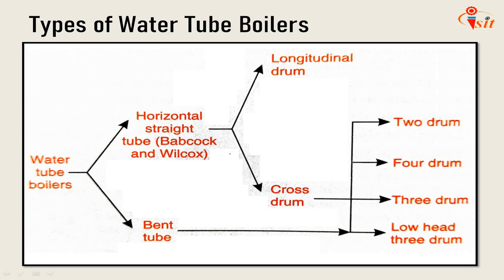Types of water tube boilers: water tube boilers are categorized into two groups. The first is horizontal straight tube, for example Babcock and Wilcox boiler. Horizontal straight tube boilers are further classified into longitudinal drum and cross drum, and the cross drum is further categorized into two drum, four drum, and three drum. The second category is bent tube, which is categorized into low head three drum.